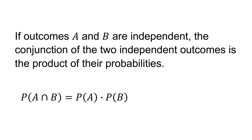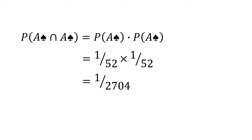Finally, if outcomes A and B are independent, the conjunction of the two independent outcomes is the product of their probabilities. That is, p(A and B) = p(A) × p(B). For example, suppose we draw a single card, place it back in the deck, and then make another draw. The probability of drawing the ace of spades twice equals 1/52 × 1/52 = 1/2,704. Note that if A and B are mutually exclusive, they are not independent, and p(A and B) = 0.